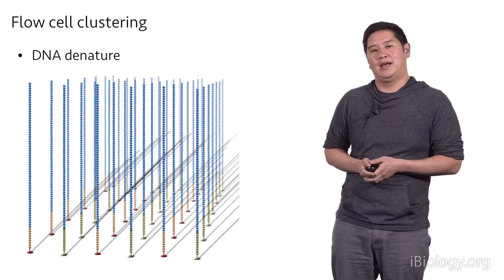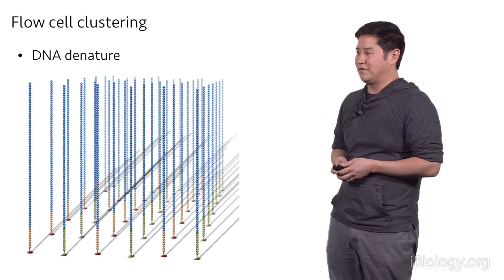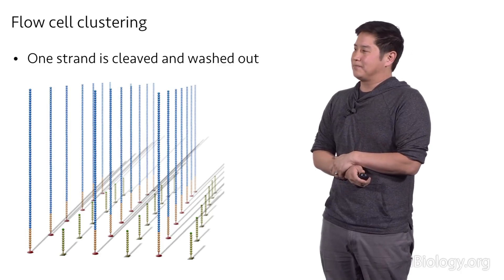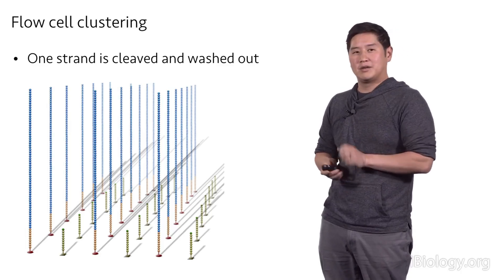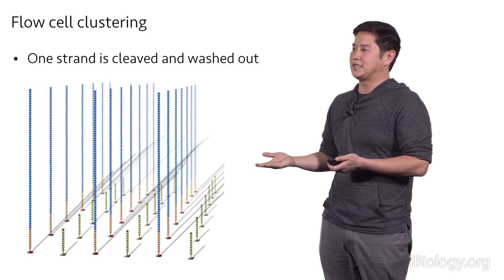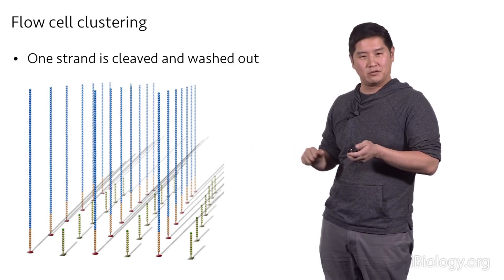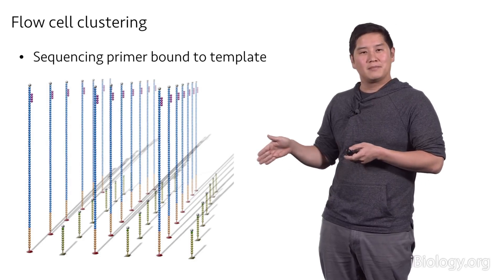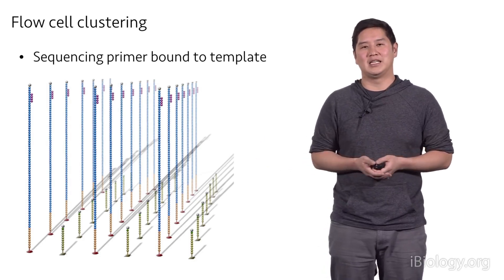We denature the strands, and then we can selectively cleave off one of the oligos or the primers, in this case the green one. And we've washed those away, so now all the thousand molecules present are all the identical strand because we removed the other strand. We flow in a sequencing primer, and now the clustering process is complete.